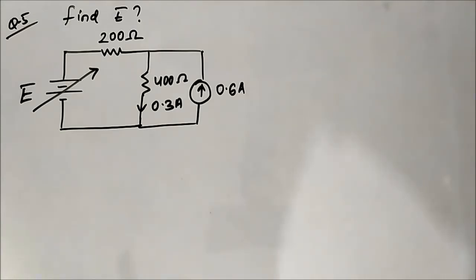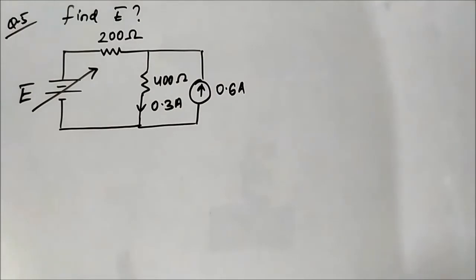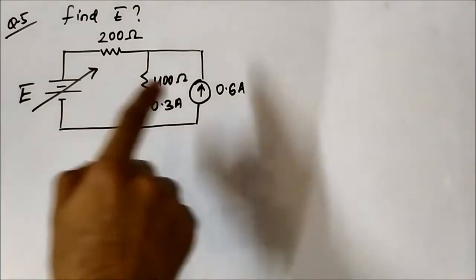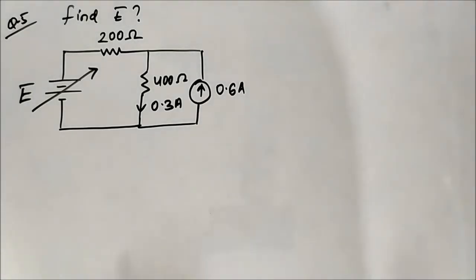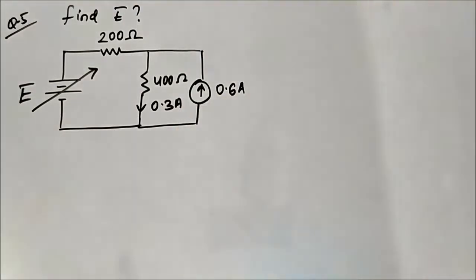We have been asked to determine the value of the variable voltage source E. There are various ways to solve this circuit — we could apply nodal analysis very easily — but we will solve it using superposition theorem since that is what we are discussing. We have to do it in two steps because there are two sources: a voltage source and a current source. In step one, we consider the current source and short circuit the voltage source.